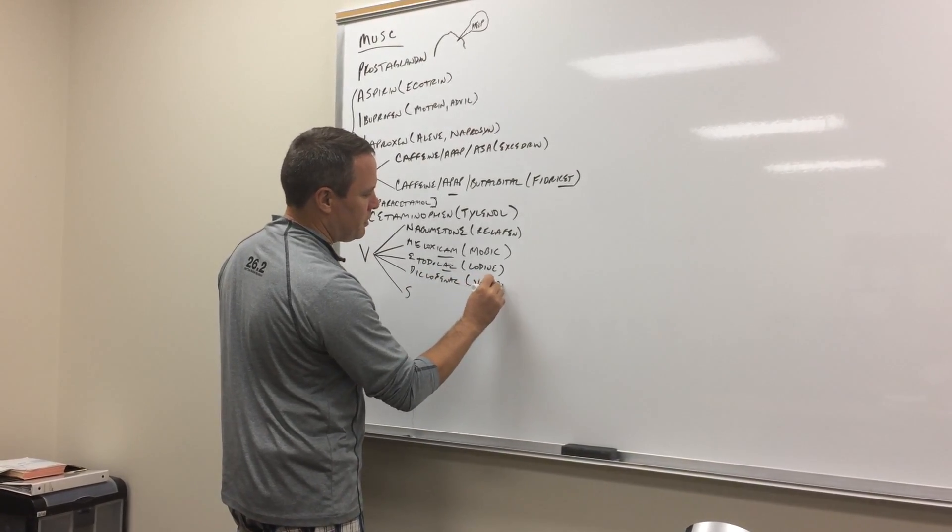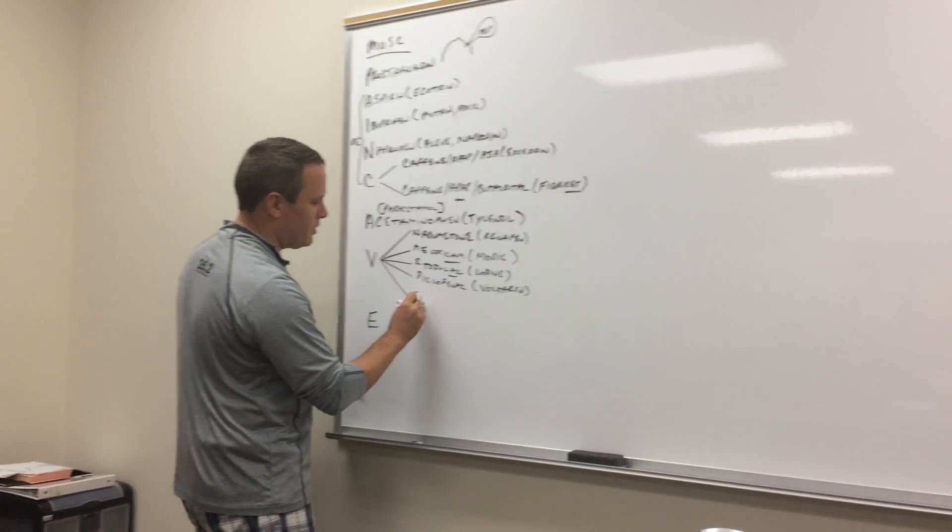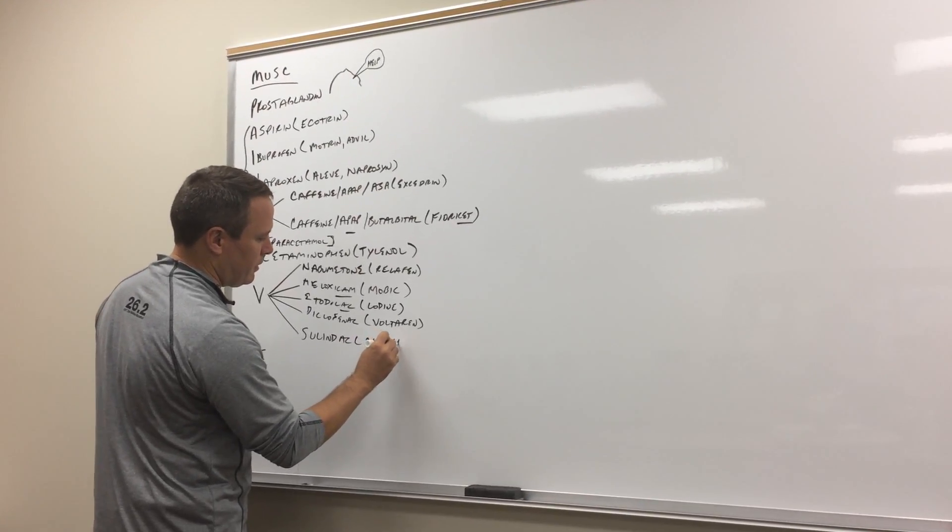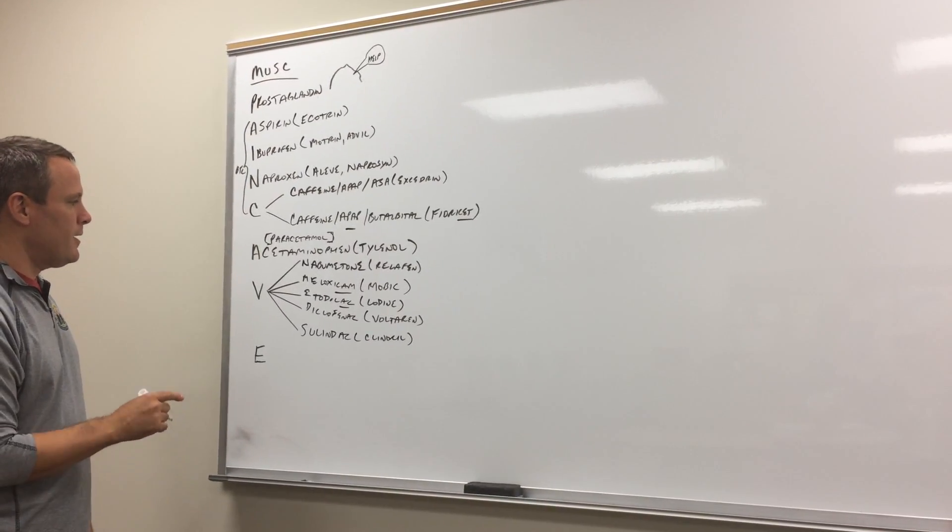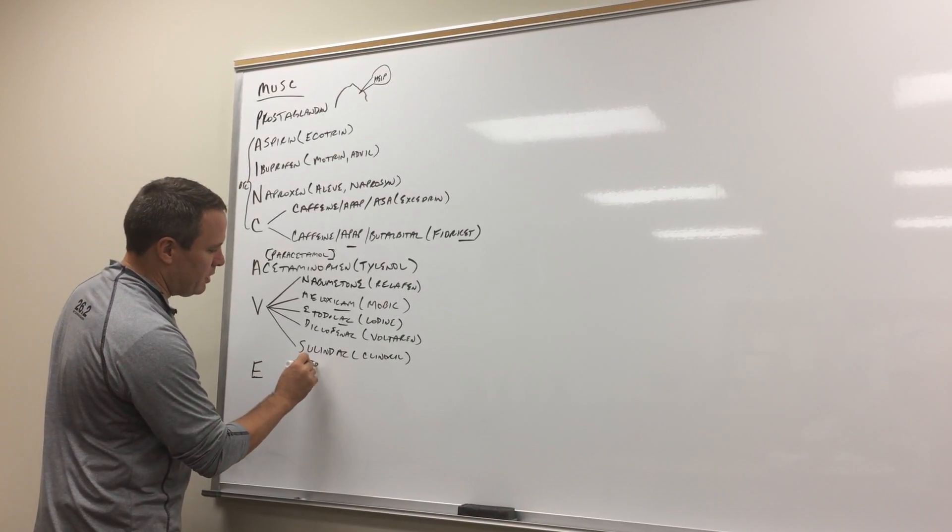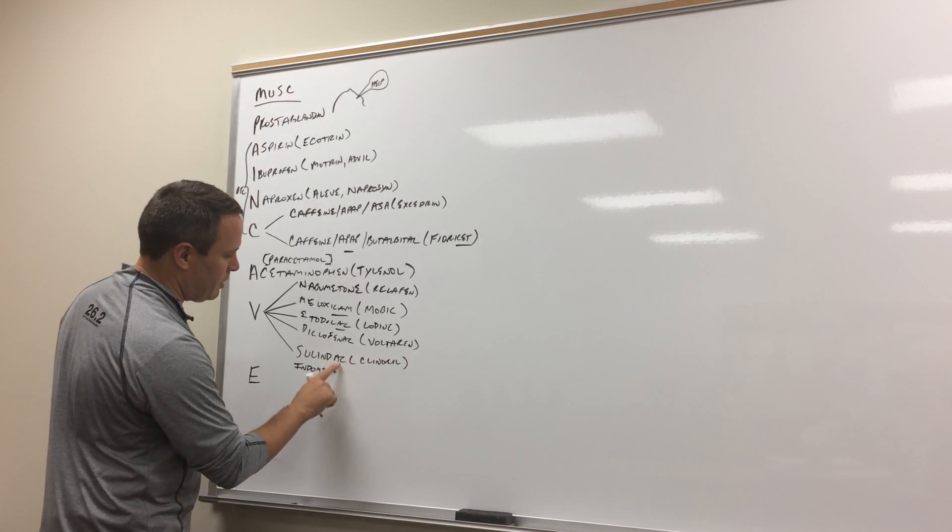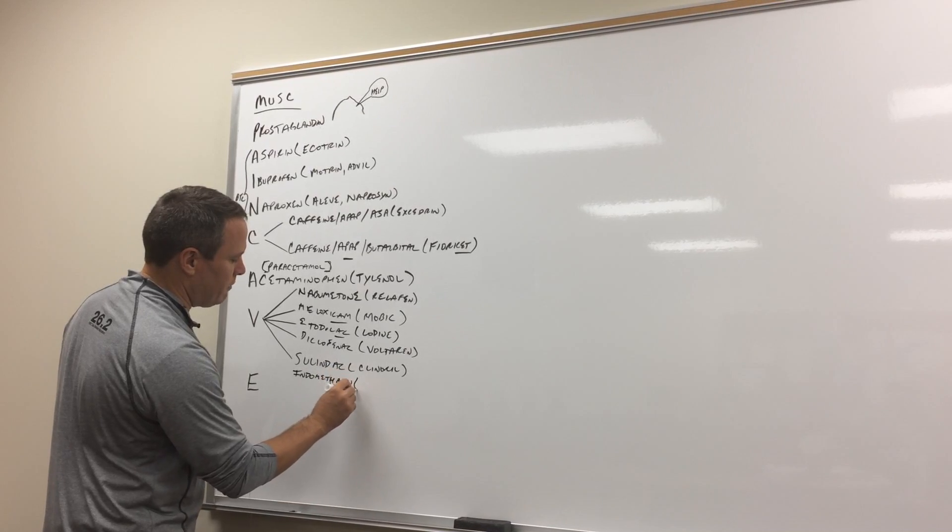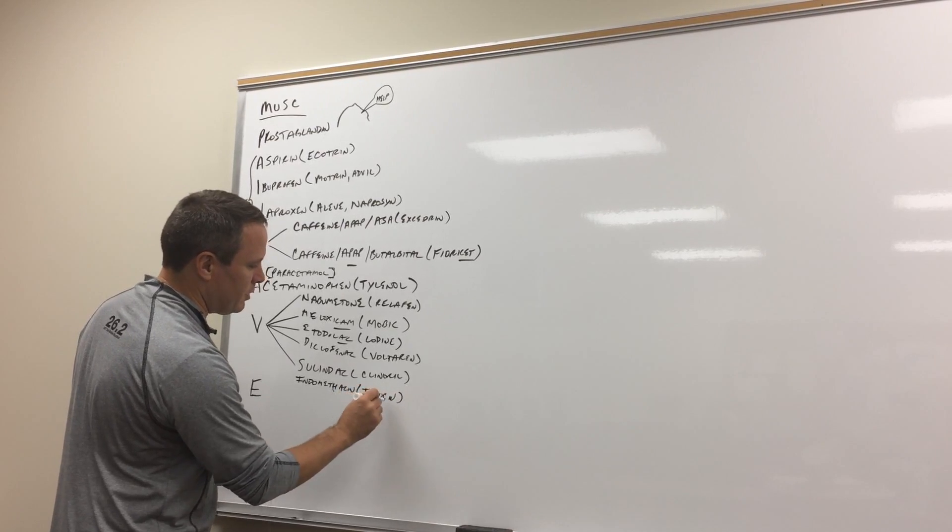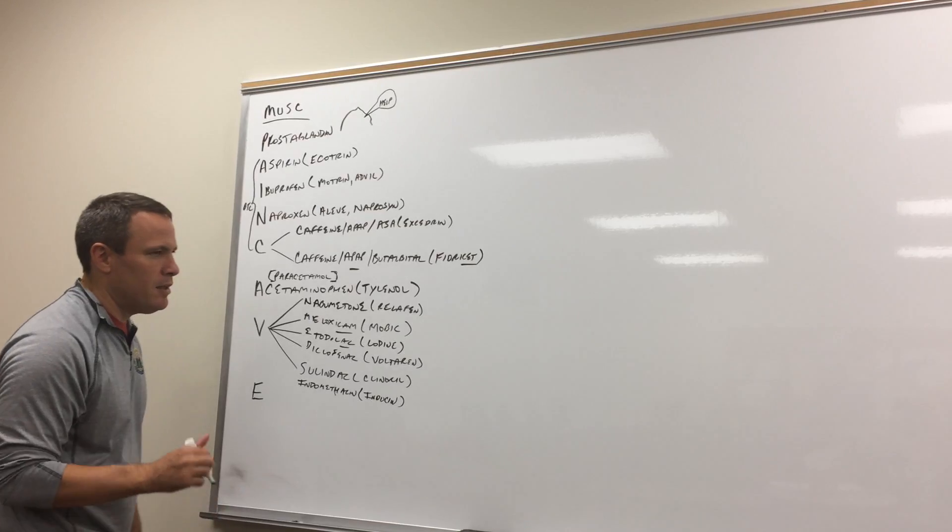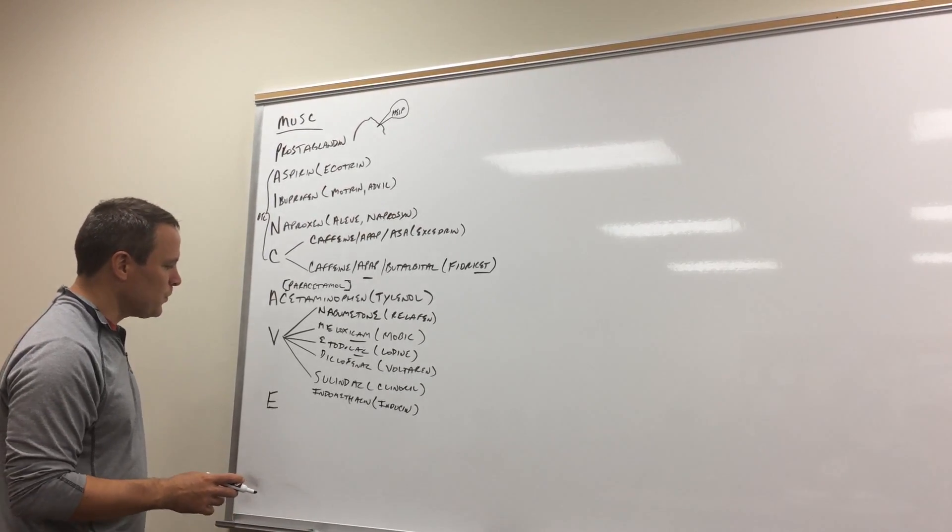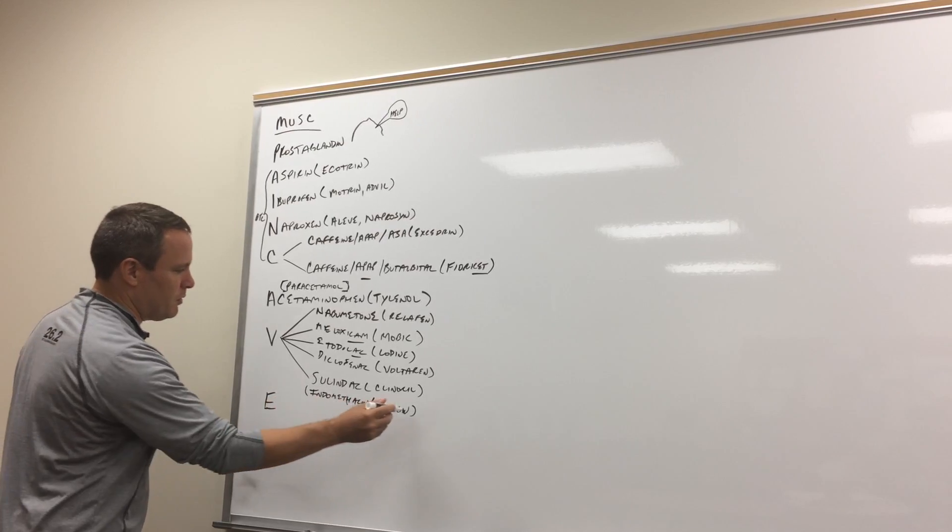Sulindac, which is Clinoril. And there's another one that's important. I haven't really thought of how we're going to put this in there. But there's another one called indomethacin. Which has important uses because of its long half-life. Indocin. And also it's used for patent ductus arteriosus, which is when you've got that hole in the artery with the newborn kiddo. So I'm not sure how we're going to do that for remembering it yet.